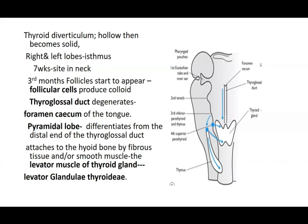That is why a patient with a thyroid swelling is asked to swallow. On swallowing, because of the attachment of the levator glandulae thyroideae and the cervical fascia capsule attached above to the thyroid cartilage, all move together. If the swelling moves on swallowing, it is a diagnostic sign that it is a thyroid swelling.